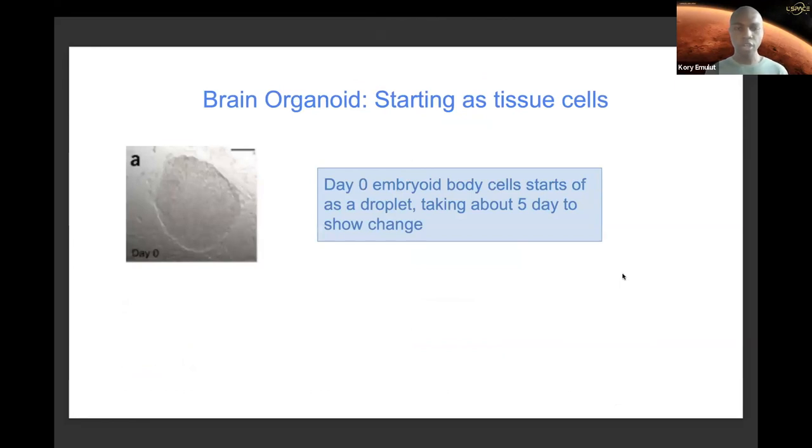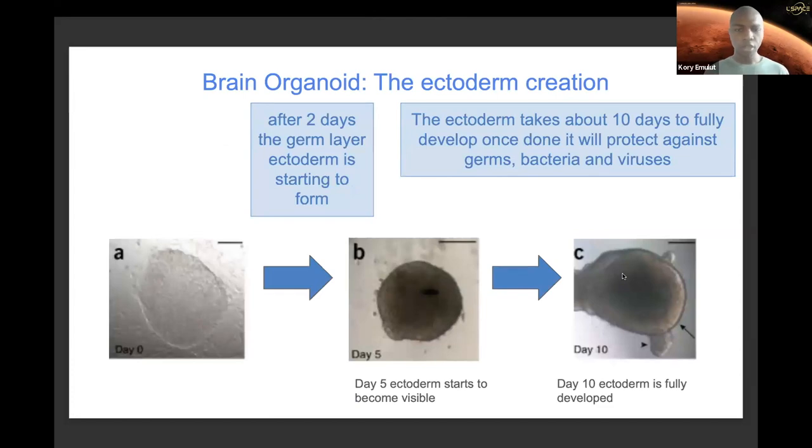So how does it start? Think of it like a newborn. Starting with embryonic body cells, they're going to start up as day zero, a blank slate, a droplet. But in a few days, you're going to start to see some change. After five days, after ten days, you see that gray outline—that's the ectoderm, the germ layer.